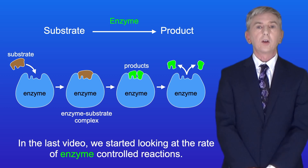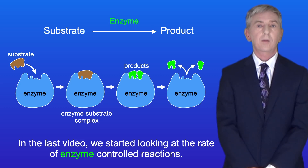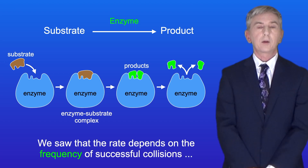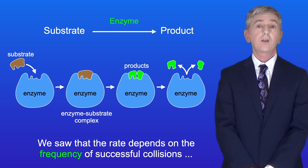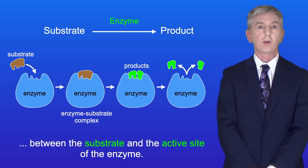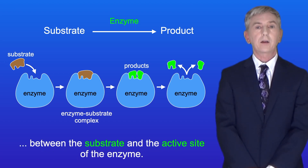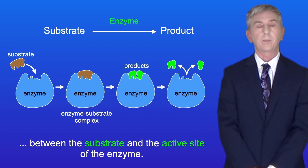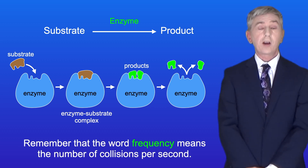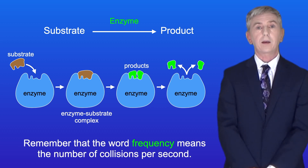In the last video we started looking at the rate of enzyme controlled reactions. We saw that the rate depends on the frequency of successful collisions between the substrate and the active site of the enzyme. And remember that the word frequency means the number of collisions per second.